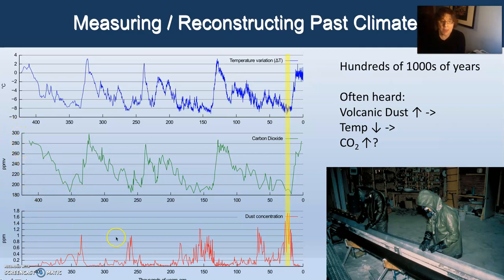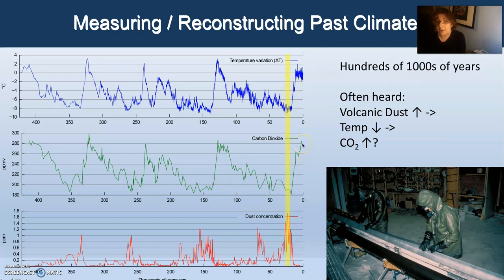We can also look at dust concentration in parts per million as part of the ice core data. You will often hear the argument that the data seems to show dust concentration increased first, then temperature increased, and then carbon dioxide increased — and therefore it's not carbon dioxide driving temperature, but rather temperature driving carbon dioxide. This is a method issue that needs to be resolved, and it's coming to light that it is clearly a method issue.